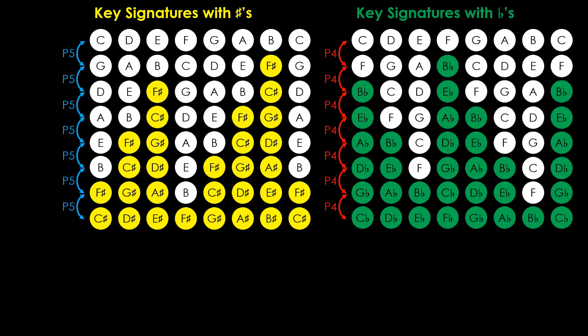For instance, G-flat major has six flats: B-flat, E-flat, A-flat, D-flat, G-flat, and C-flat.